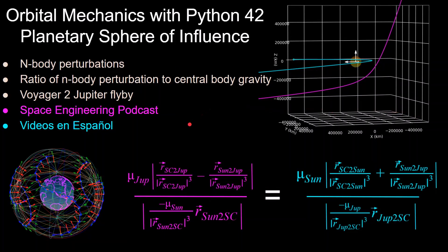This is a 40-second video in this series, and this one will be going over the n-body perturbations, the ratio of the n-body perturbation to central body gravity, which is how the sphere of influence is defined. We'll be using the Voyager 2 flyby of Jupiter as an example to visualize all of these equations.